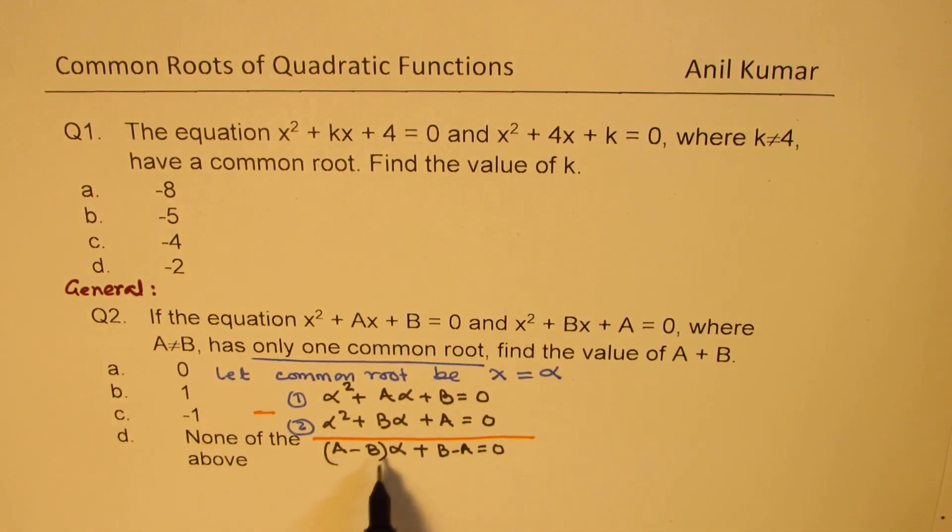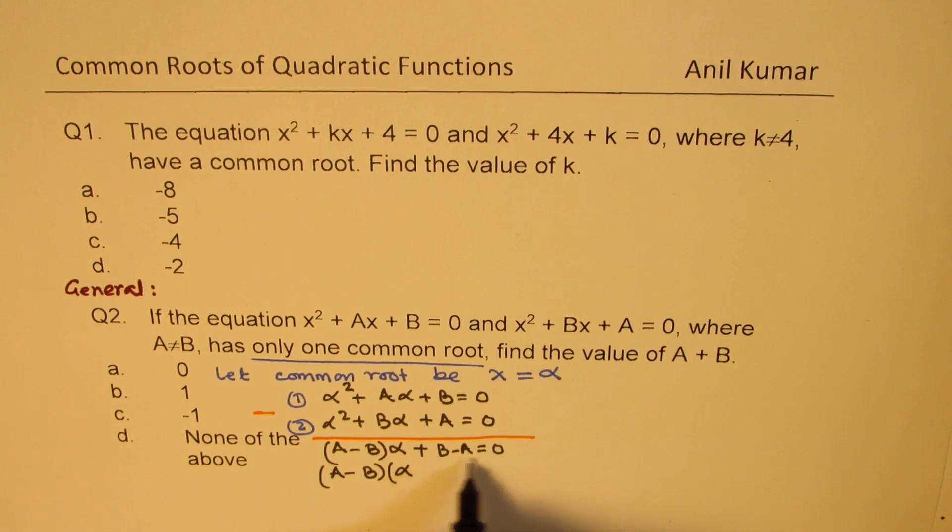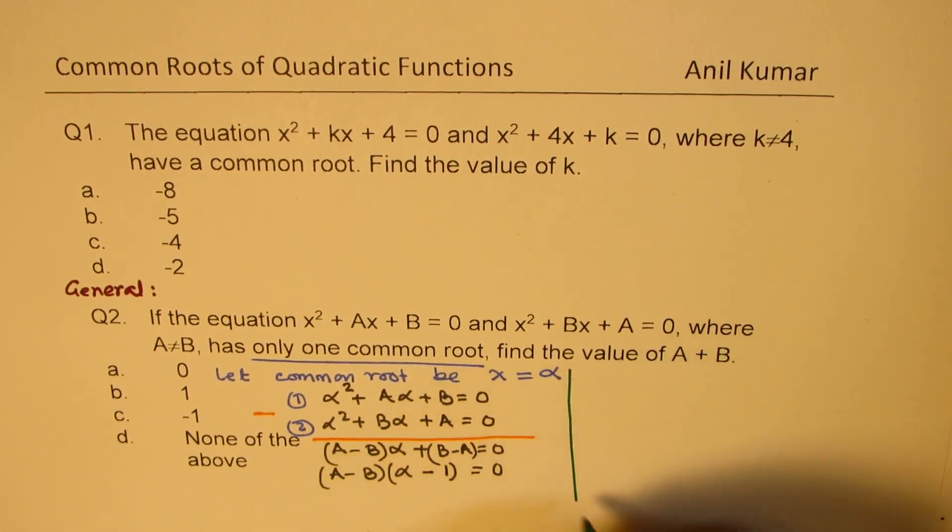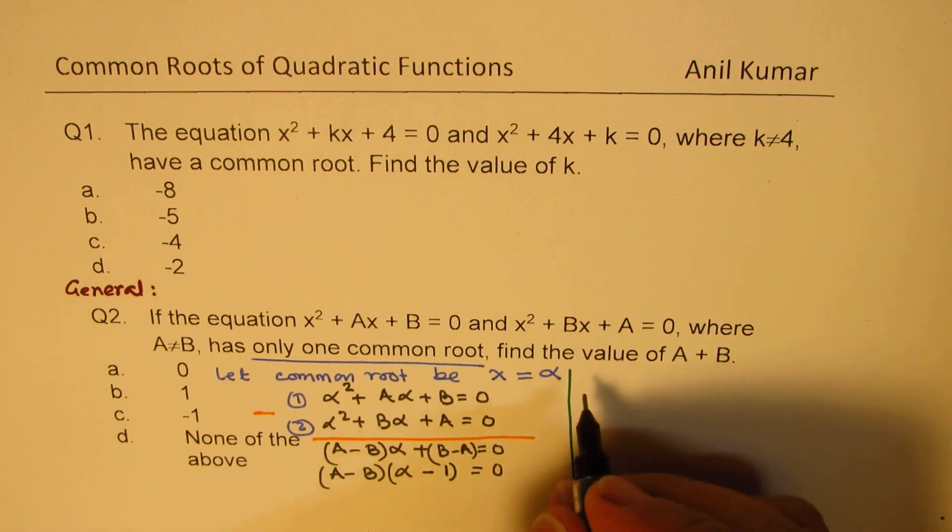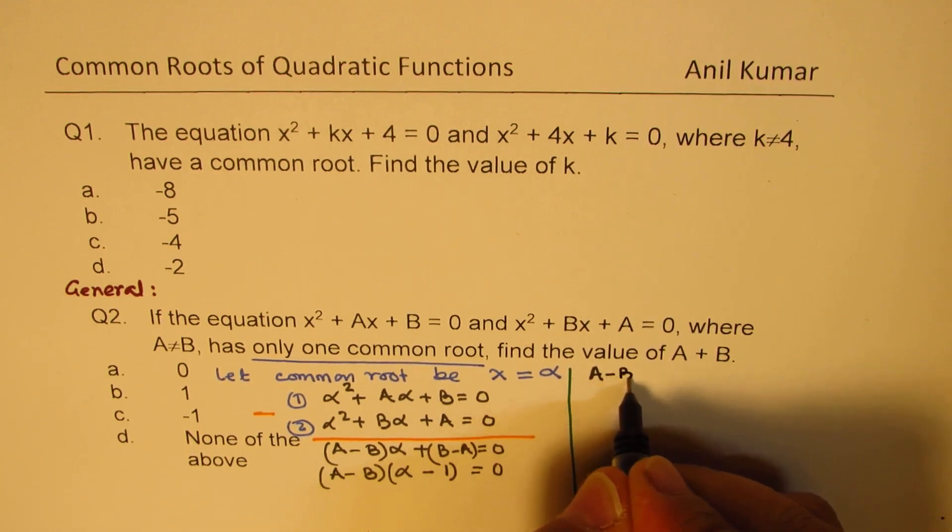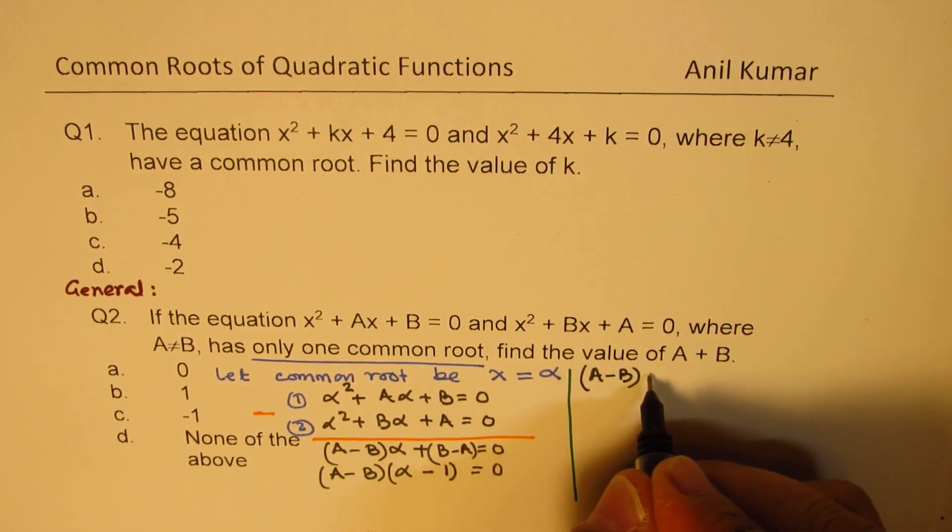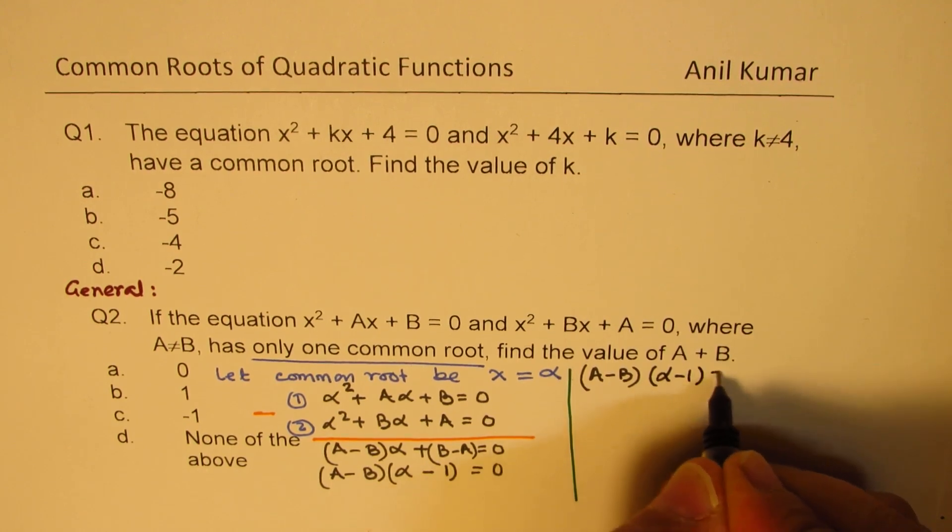However, we can always take (a - b) common, right? So if we correct this as (a - b), here we get α. This may become minus, right? Minus 1 = 0. So we have a factored form.